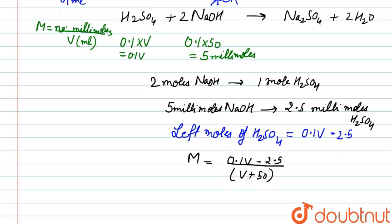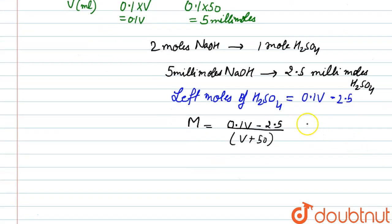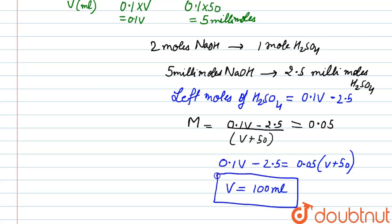Now we are given the molarity of H2SO4 left, that is 0.05 molar, so we will equate them. 0.05, this will be 0.1V minus 2.5 is equal to 0.05 times V plus 50. Now after solving this we will get the value of V as 100 ml. So this much volume will be required for H2SO4, so this is our answer.